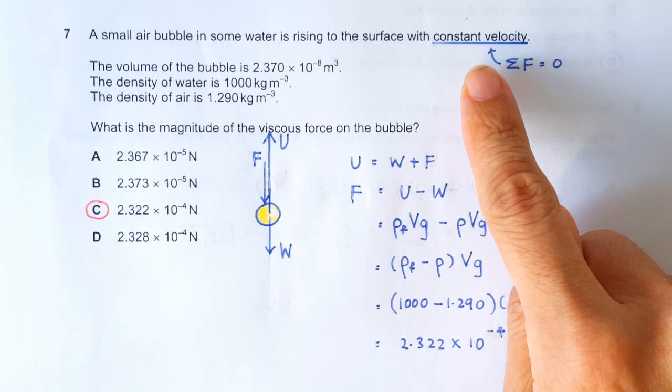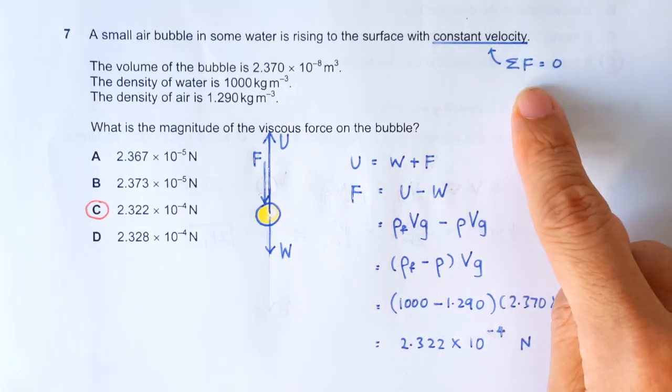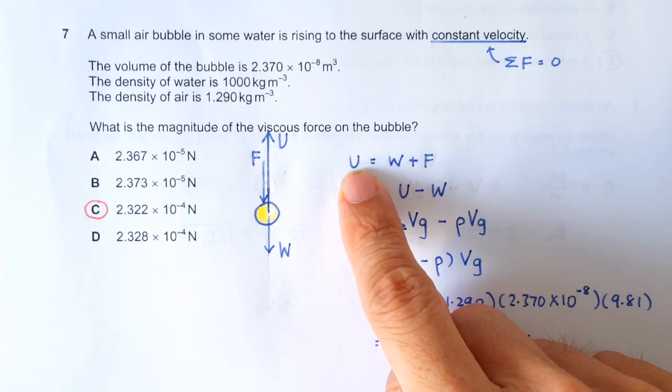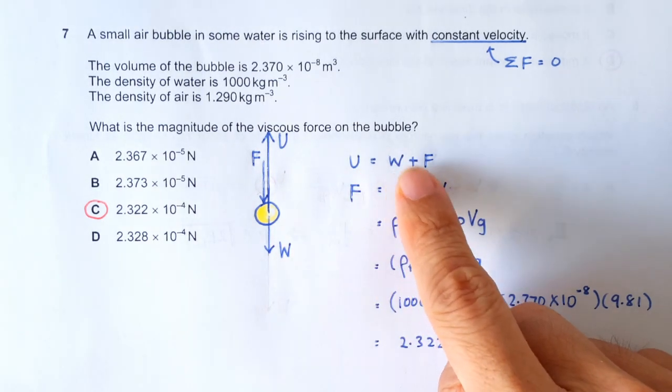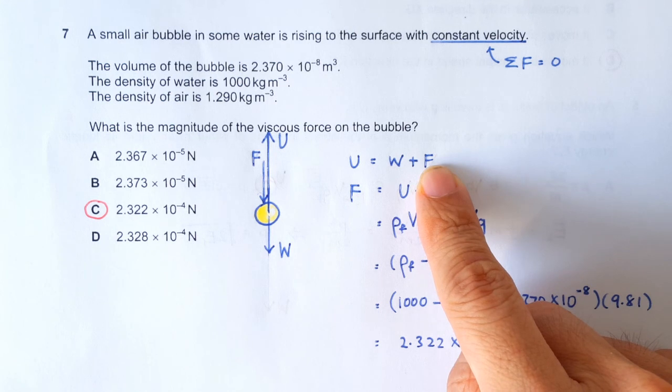The question says that the air bubble is going up at a constant velocity. That means the net force acting on the bubble is zero. That's why we can write the upward uptrust to be equal to the downward weight plus the downward viscous force.